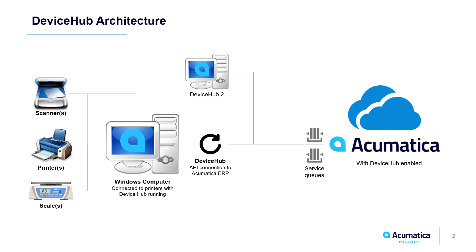Beginning with Acumatica 2019 R2, I can have multiple Device Hubs running on the same internal network. This allows larger organizations to originate jobs from different computers. When I initiate a job in Acumatica, the system sends a push notification to Device Hub. When Device Hub receives the notification, it sends a request to the device. The device gathers information, which is then transferred to Acumatica via Device Hub.